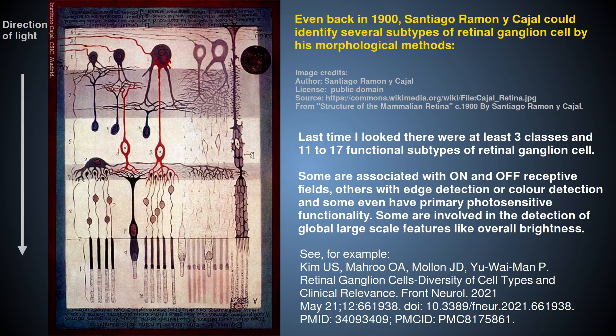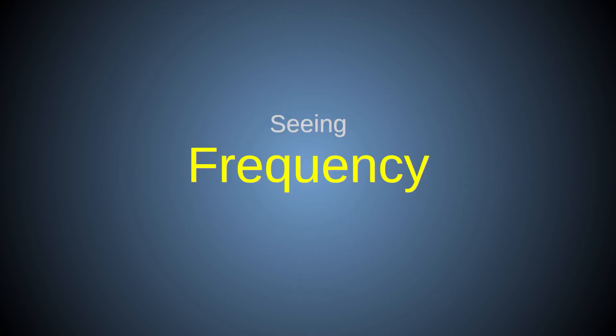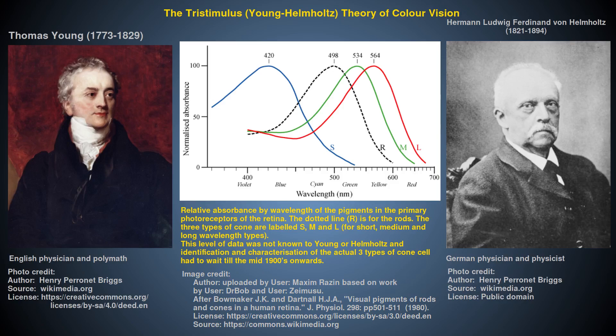There is an enormous literature on all of this, and I've only scratched the surface. So let's just say that perceived brightness of an EM field is related to its intensity, but in a way that defies any simple or fixed response curve. Most people will be familiar with the fact that colour vision depends on our ability to discriminate between EM radiation with different frequencies. The tri-stimulus theory of colour vision — that the perception of any colour can be created from an appropriate mixture of three primary colours — was put forward in the 1800s by Thomas Young and Hermann von Helmholtz, and is called the Young-Helmholtz theory.